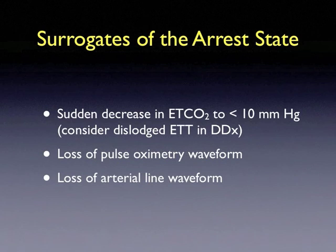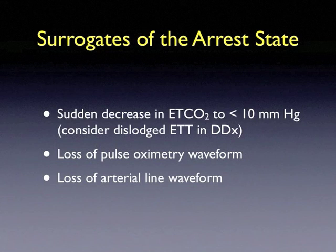Other surrogates of the arrest state can be used, including a sudden decrease in end-tidal CO2 to less than 10 millimeters of mercury. However, one must also consider a dislodged endotracheal tube in the differential diagnosis. Additionally, the loss of a pulse oximetry or arterial line waveform can indicate the arrest state as well.